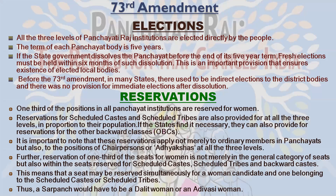Another important thing the 73rd Amendment brought in was reservations. According to this amendment, there is mandatory reservation of seats in all panchayats at all levels for Dalits, that is the Scheduled Castes, and Adivasis, that is the Scheduled Tribes. They can also provide reservation for OBCs. It is important to note that these reservations apply not merely to ordinary members but also to the post of adhyakshas or chairpersons.